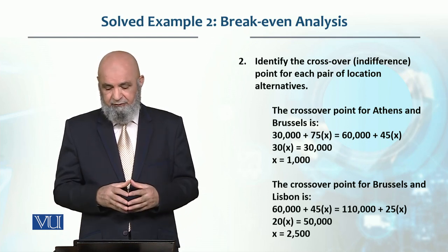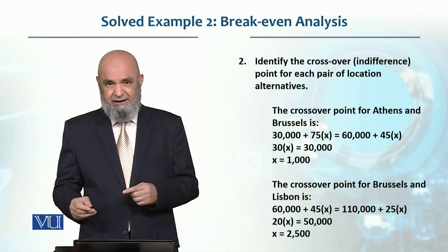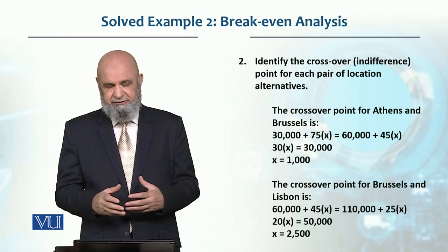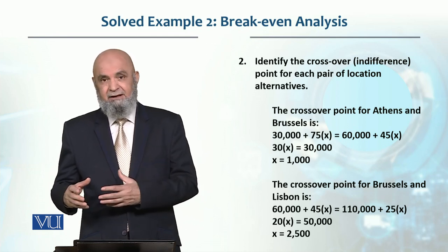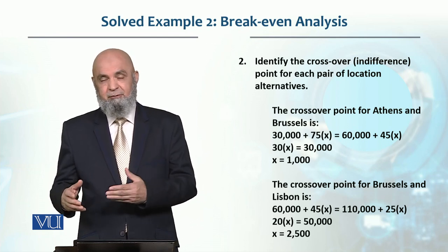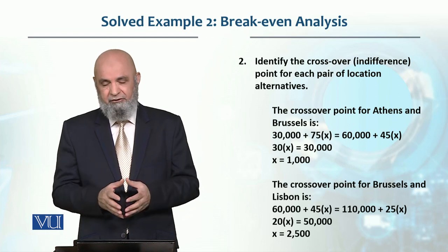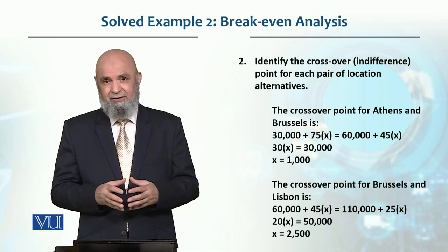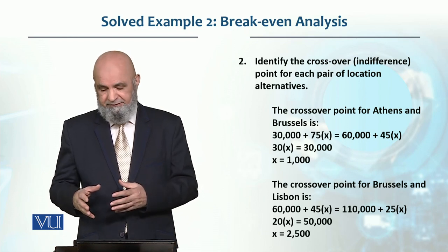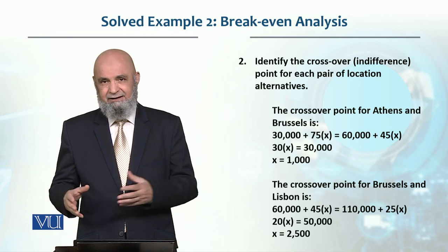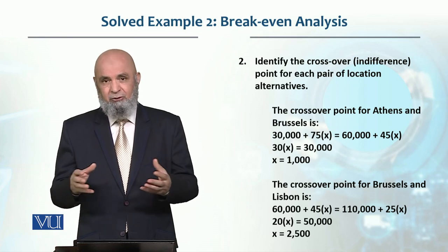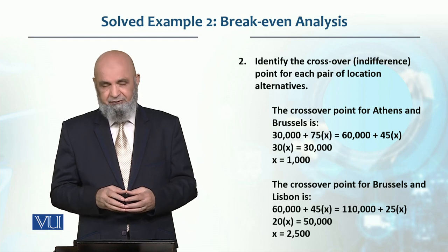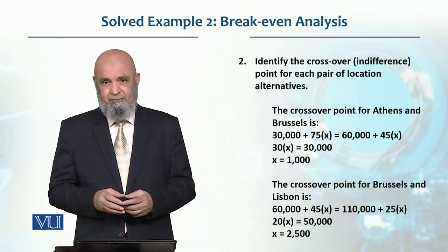The second crossover point is between Brussels and Lisbon. Brussels has a fixed cost of 60,000 plus 45 variable cost multiplied by x for total cost. Similarly, Lisbon has a fixed cost of 110,000 and variable cost of 25x added. Solving: 20x equals 50,000, so x equals 25,000 — the second crossover point.